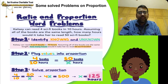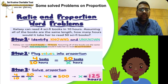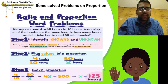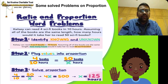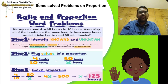Step 1: Kelsey can read 4 sci-fi books in 10 hours. How many hours would it take her to read 50 books? Step 2: Plug values into a proportion. For 4 books you take 10 hours; for 50 books, you take x hours — the unknown quantity.